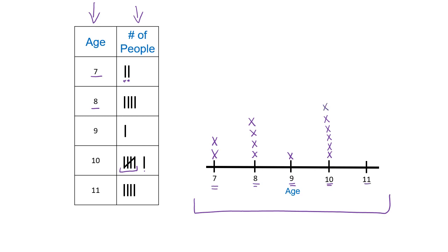Finally, I get to eleven. I see that there are four tally marks for eleven, so I go ahead and draw four X's to represent the four people who are eleven years old. I also make sure, boys and girls, that down here there is a title or label — it says Ages — and that helps anybody reading this line plot to know what you're talking about.